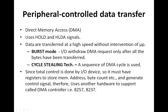In the DMA data transfer scheme, the input-output devices control the data transfer, and hence they must have registers to store the memory address and a count register for how many data bytes are to be transferred. They must also have an electronic circuit to generate the control signals required for DMA operation. Since input-output devices normally don't have these facilities, a DMA controller designed by Intel with chip number 8257 is used to help input-output devices perform DMA data transfer. This is a general introduction to the DMA data transfer scheme.